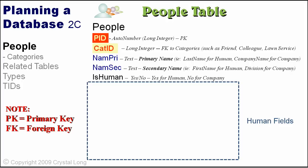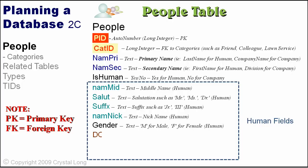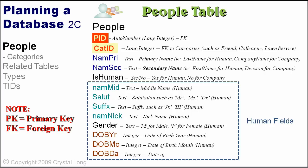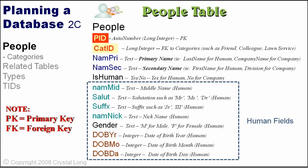If the record is a human entity, we will keep track of additional information: middle name, salutations such as Mr., Ms., or Dr., suffix such as Junior or Third, nickname, and gender. Date of birth will be tracked in three numeric fields instead of one date field. How many people do you know the month and day of a birthday, but not the year? By tracking this information in three fields, we can enter just what we know, and it can always be combined when we need an actual date.